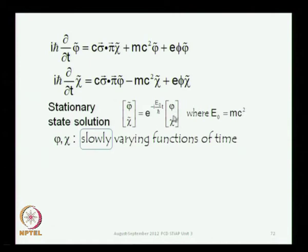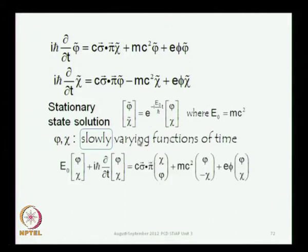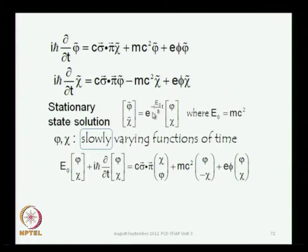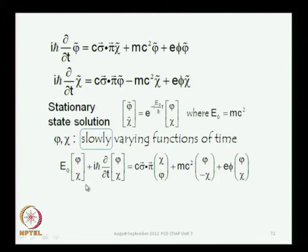Since most of the time dependence is already contained in e^{-iE₀t/ℏ}, the residual factors phi and chi without the tilde will have only marginal time dependence — they depend weakly on time, because most of the strongest dependence has already been factored out. So the functions phi and chi, which appear without the tilde, are slowly varying functions of time. Now let us take the time derivative of phi-tilde and chi-tilde, and after cancellation you get a new equation for phi and chi.